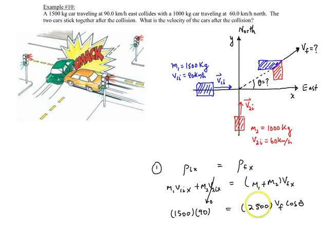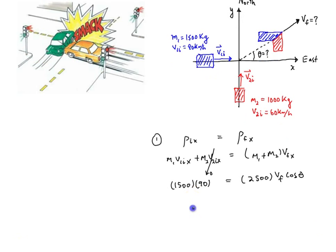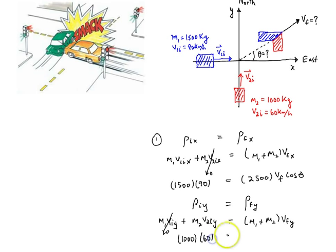So, there's one equation, and then we can get the second equation. We have momentum initially in the y direction, again equals momentum finally in the y direction. You have mass 1, velocity 1 initially in the y direction, plus mass 2, velocity 2 initially in the y direction. But, this term goes to 0 because this guy is completely horizontal and no vertical velocity. And then this will be equal to mass 1 plus mass 2 times velocity final in the y direction. So, if you sub in your numbers, you'll have 1,000 times 60 equals 2,500 times velocity final times the sine of theta.